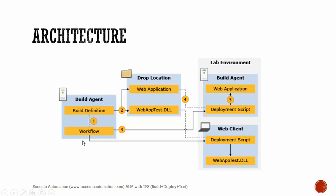The first build agent is responsible for actually building your source code into a compiled application and dropping it into the drop folder. That's the complete difference between the two build agents. There will also be a web client that handles deployment of the web script and runs the web app tests, pulling from that drop location. That's the complete architecture.